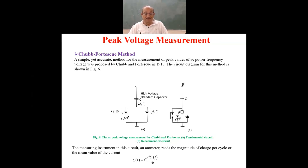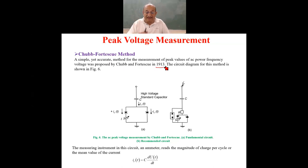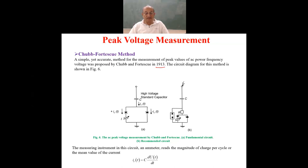One of the very popular and very old methods for measuring peak value is the Chubb-Fortescue method. In 1913, a very simple method was given for measuring the peak value of AC power frequency voltage. Peak value measurement was important even in 1913 — more than 100 years back. The Chubb-Fortescue method still remains one of the simplest and quite accurate methods, as you can see in the diagram.